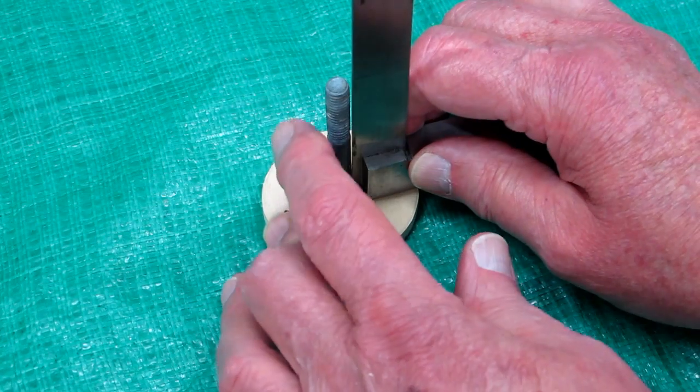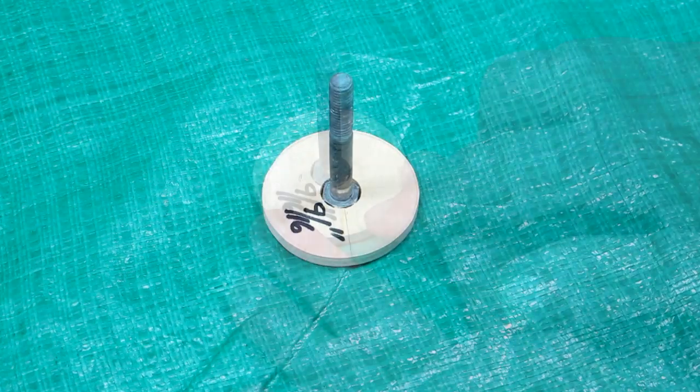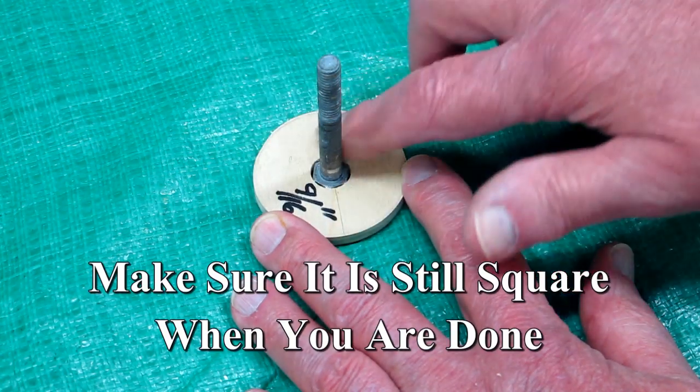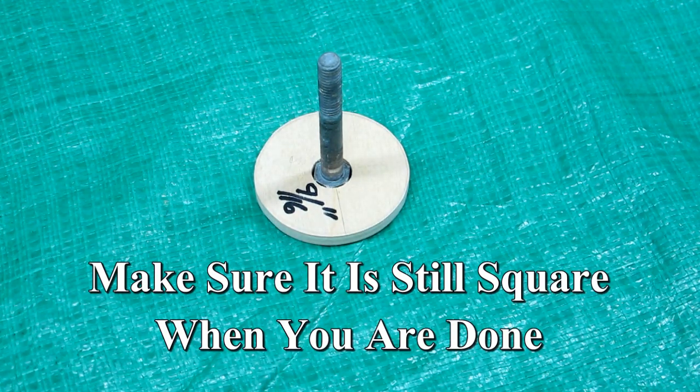So that's square in both directions. Clean this up, make sure this is good and smooth, use a paper towel, a little alcohol, and let that set up overnight.